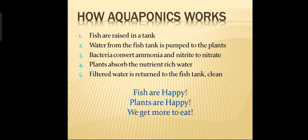Now, how does aquaponics work? Fish are raised in a tank. Water from the fish tank is pumped to the plants. Bacteria convert ammonia and nitrite to nitrate. Plants absorb the nutrient-rich water, and the filtered water is returned clean to the fish tank.